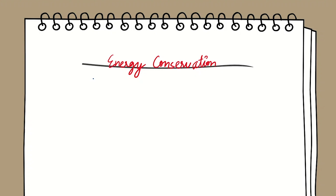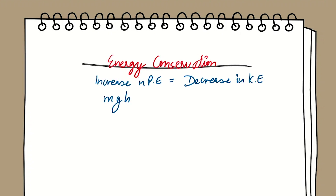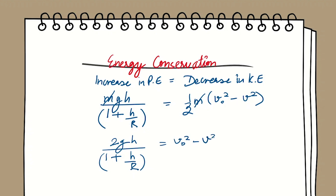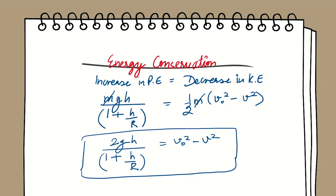Using energy conservation, the increase in potential energy equals the decrease in kinetic energy: mgh / (1 + h/r) = (1/2)m(v₀² − v²). Cancelling m and multiplying through, we get 2gh / (1 + h/r) = v₀² − v². This is the expression for v in terms of h, r, v₀, and g.